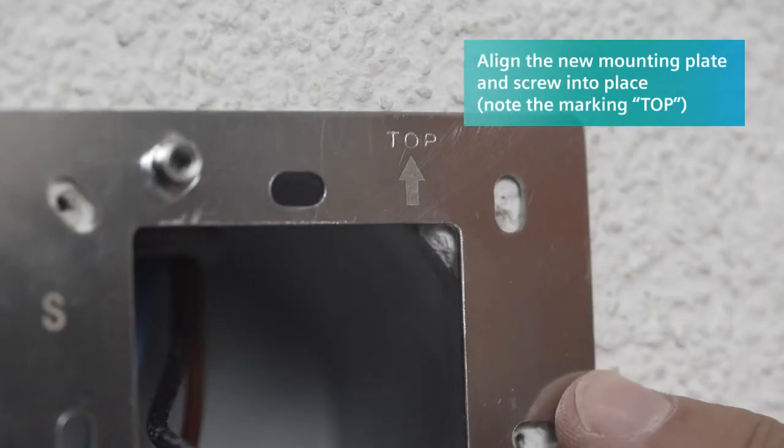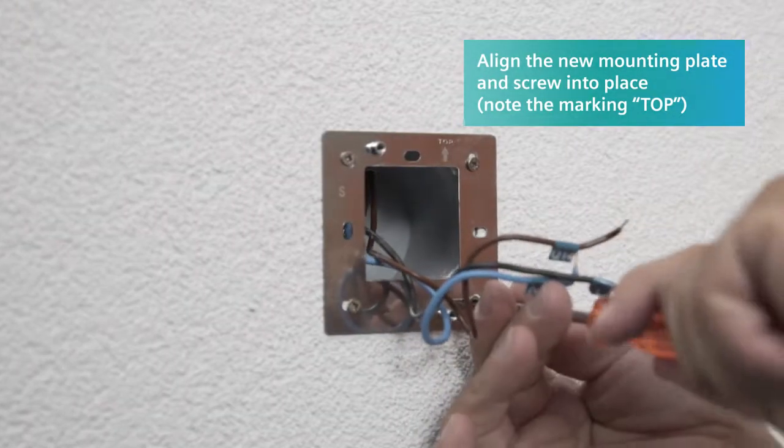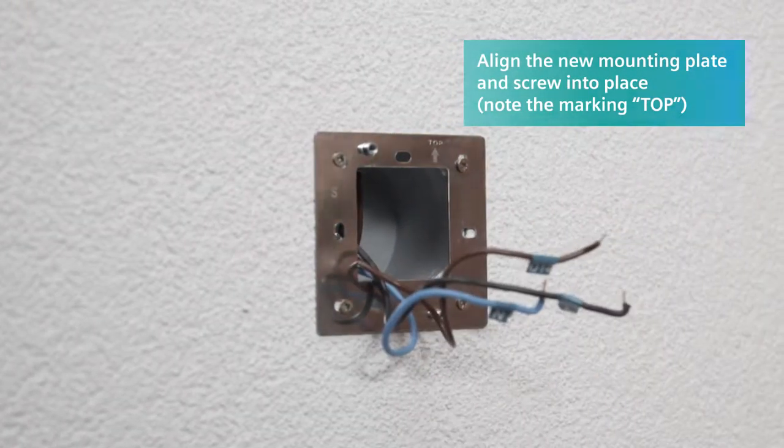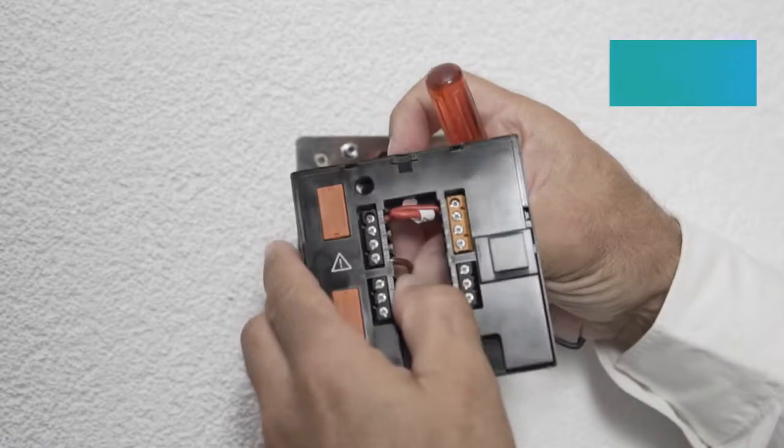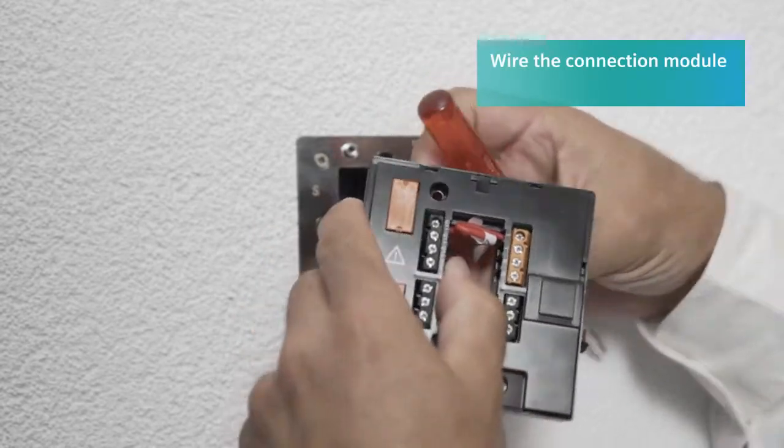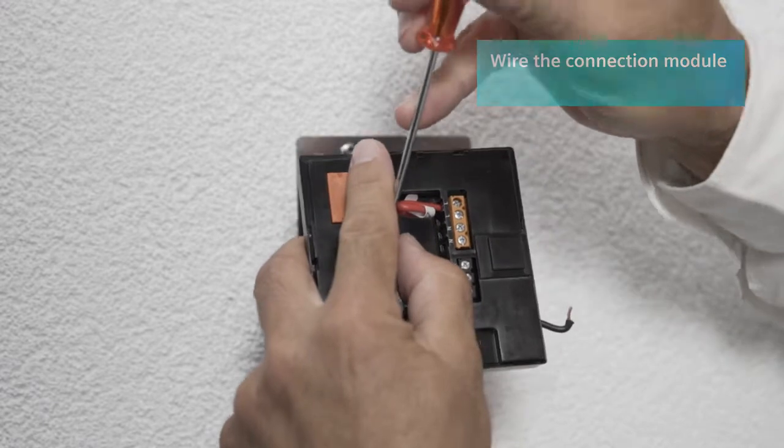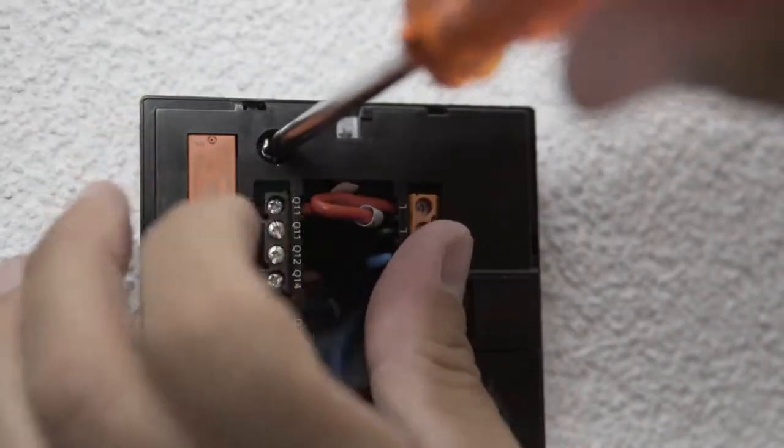Align the new mounting plate for the smart thermostat, being careful to note where it's marked top and screw into place. Now connect the labeled wires to the matching terminals on the connection module and then screw the module firmly to the mounting plate.